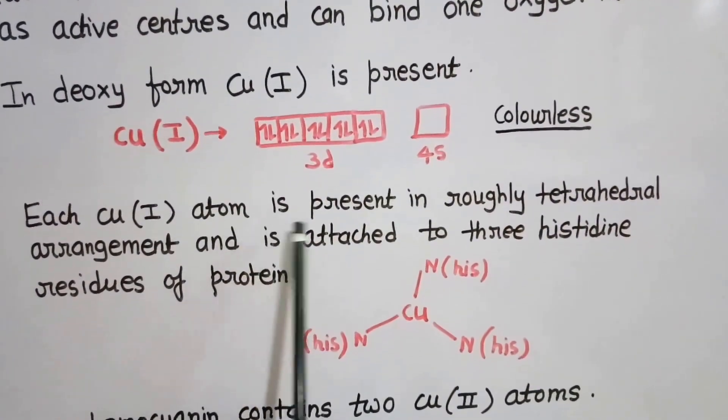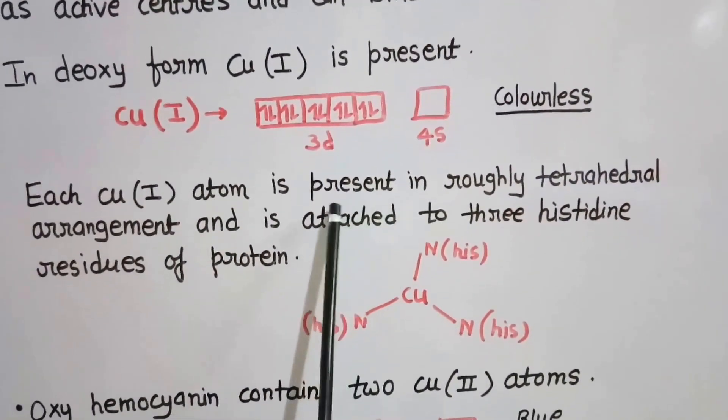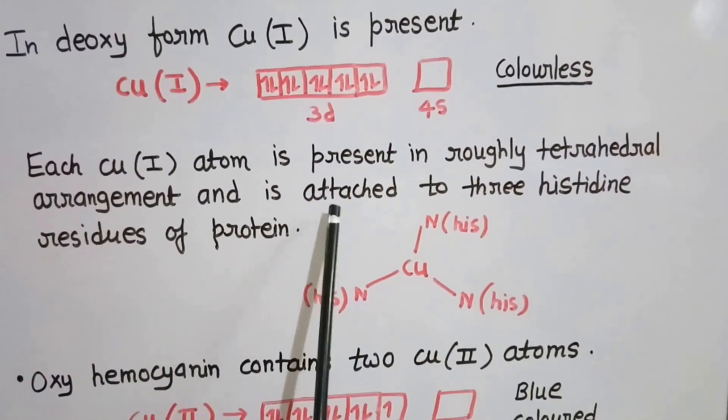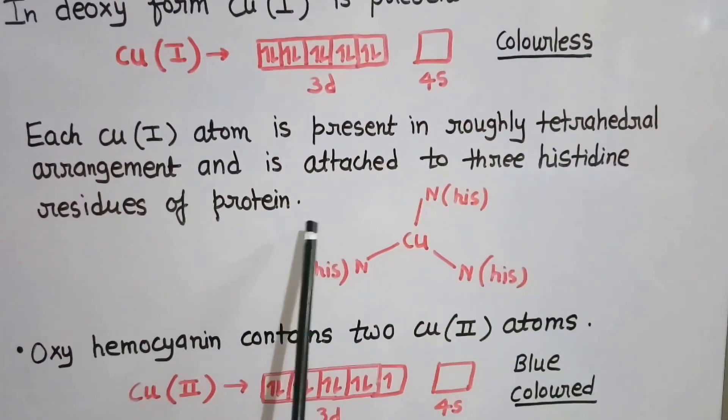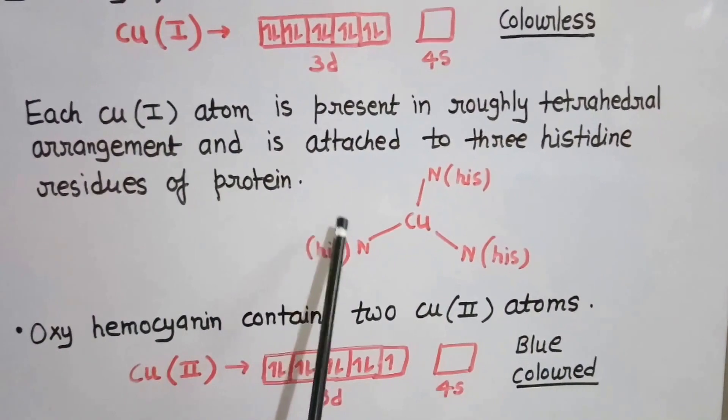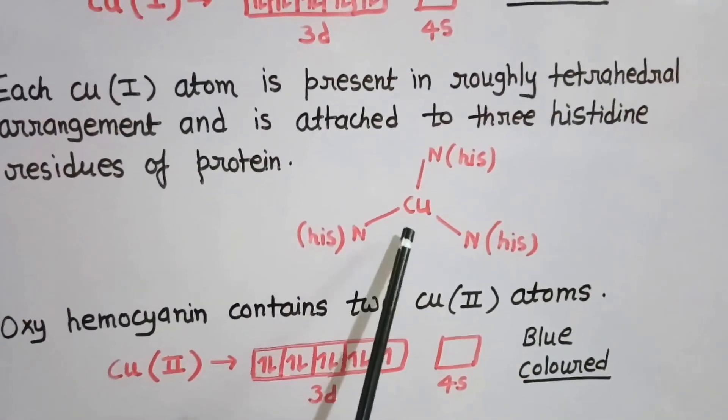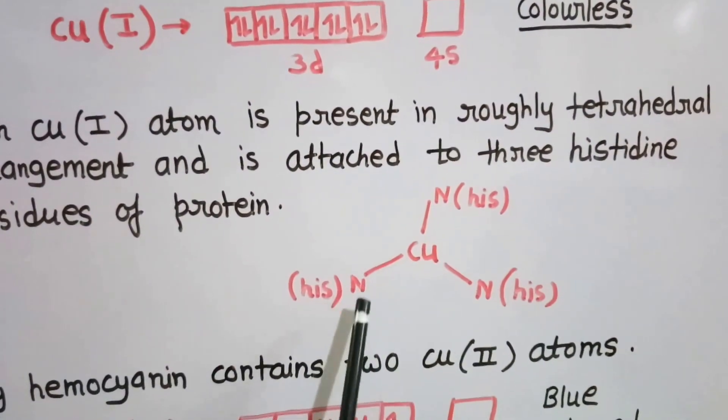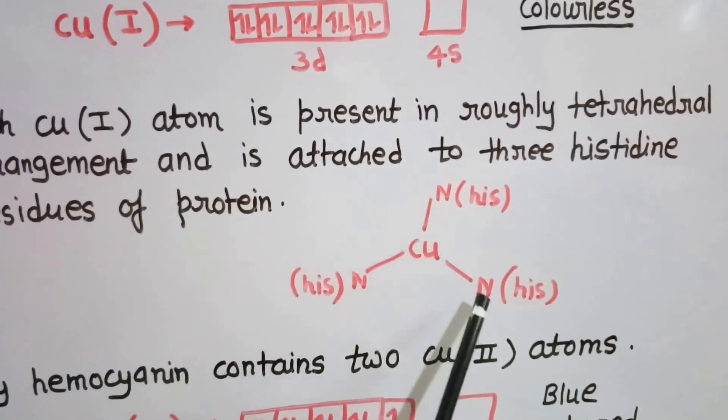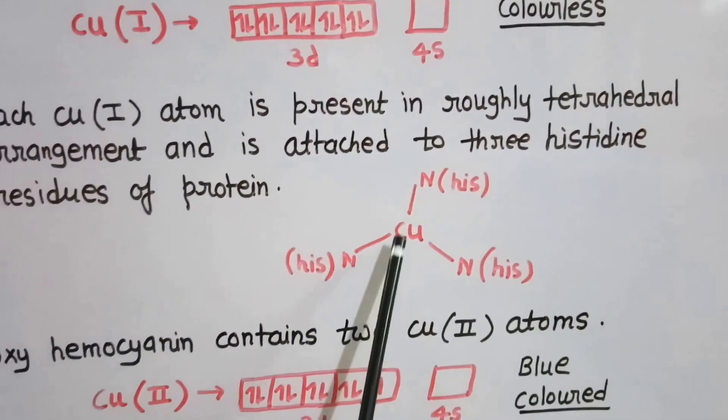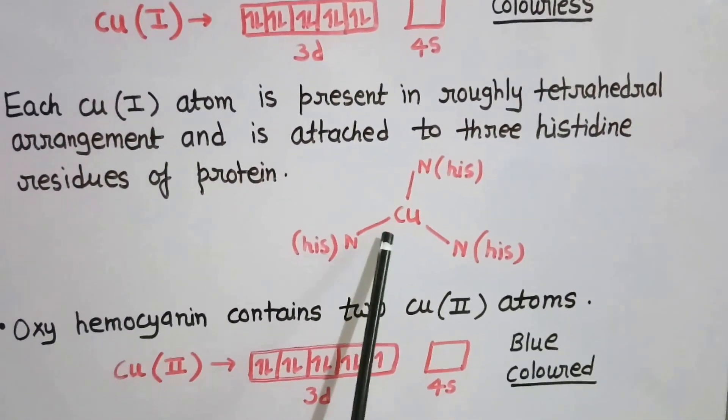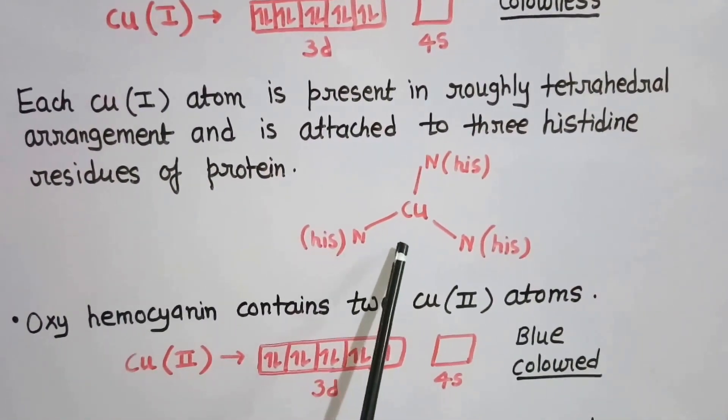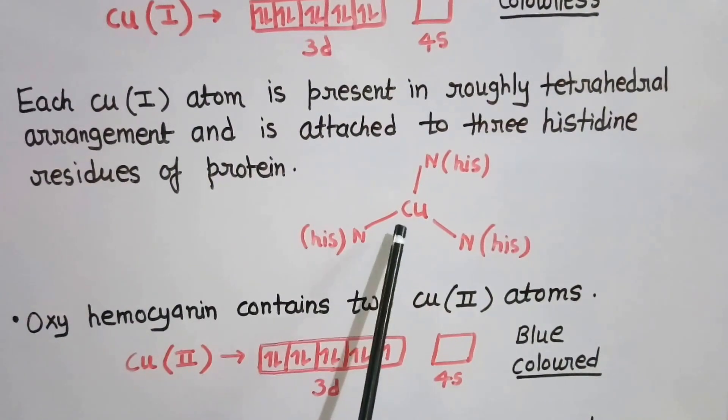Each copper atom is present in a roughly tetrahedral arrangement and is attached to three histidine residues of protein. The copper is in the center of the tetrahedron, with three corners occupied by nitrogen of histidine residues, while the fourth corner is vacant and can be occupied by oxygen.